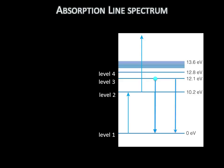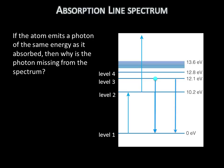Okay, I know what you're thinking. You're remembering the last lecture when I said that an electron in a higher energy level will jump back down to a lower level and the atom will emit a photon. And you're wondering, if the atom emits a photon of the same energy as it absorbed, then why is the photon missing from the spectrum? A couple of reasons.